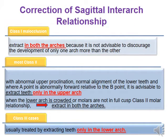Correction of sagittal inter-arch relationship. In Class 1 malocclusion, extract in both arches, as it is not advisable to discourage the development of only one arch more than the other. In most Class 2 cases with abnormal upper proclination, normal alignment of lower teeth, and where A point is abnormally forward relative to B point, it is advisable to extract teeth only in the upper arch. When the lower arch is crowded or molars are not in full Class 2 molar relationship, then extract in both arches. In Class 3 cases, usually treated by extracting teeth only in the lower arch.